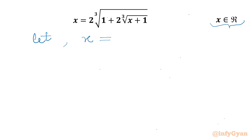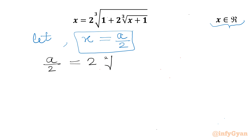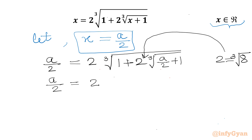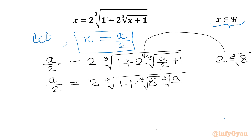We will consider x equal to a over 2. Let's check what will happen after this substitution. The equation will become a over 2 equal to 2 times cube root of 1 plus 2 times a over 2 plus 1. Now we know that 2 is cube root of 8, so we can apply this here. So I will be writing a over 2 equal to 2 times cube root of 1 plus cube root of 8 times cube root of a over 2 plus 1.